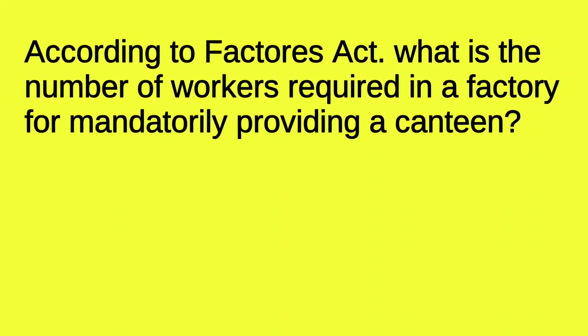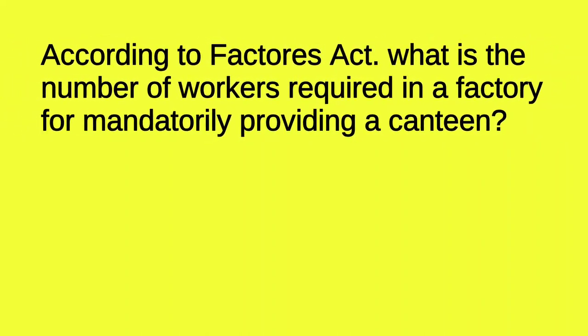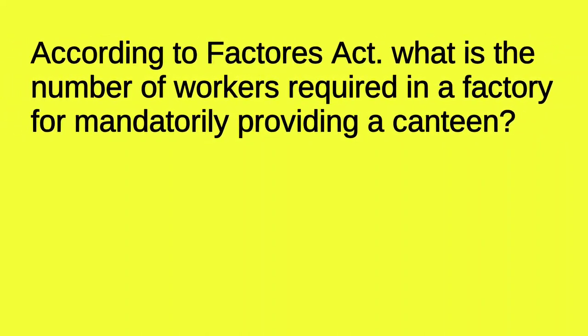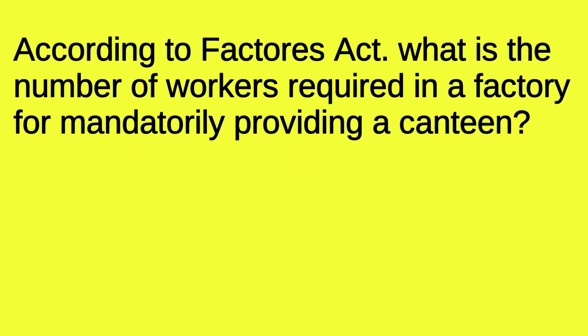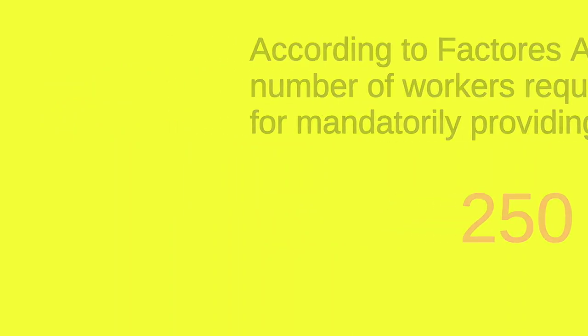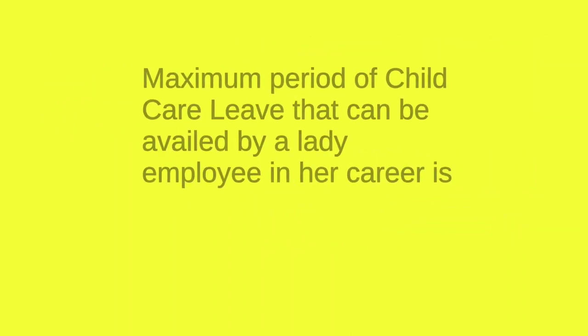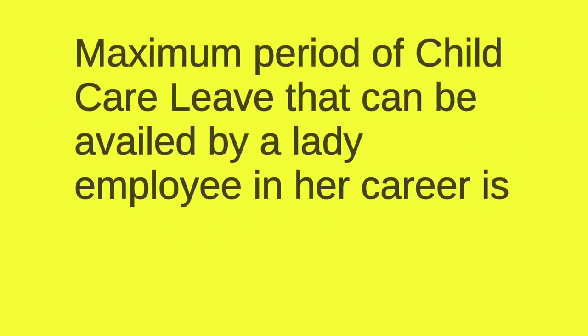According to the Factories Act, what is the number of workers required in a factory for mandatory provision of a canteen? For the purpose of providing a canteen, the threshold number of workers is 250.